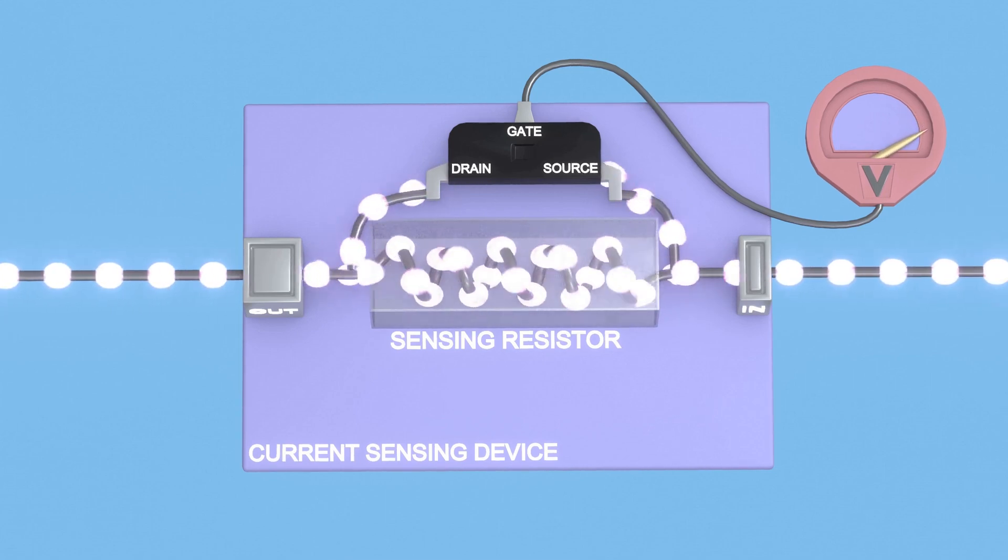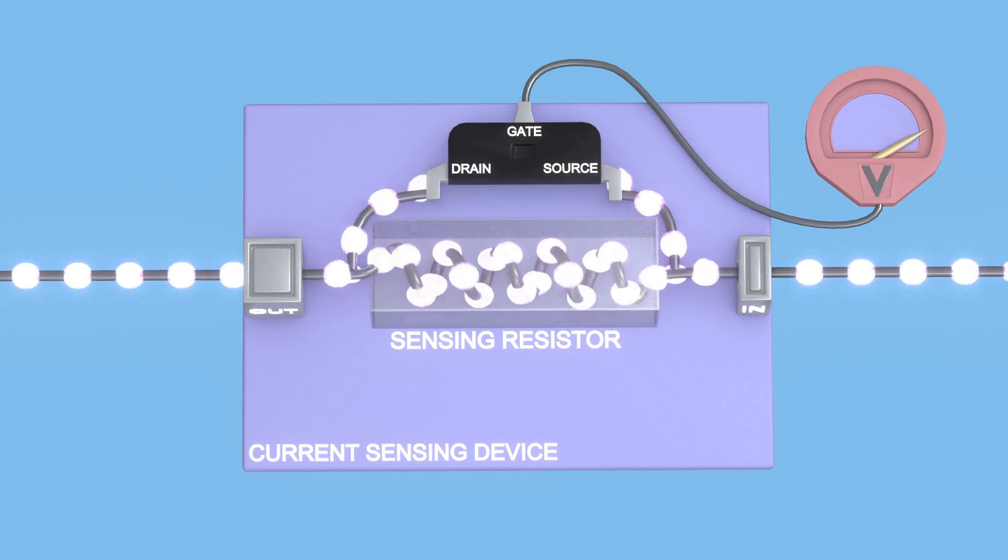By applying Ohm's law, V equals IR, we can observe the information regarding the changing current.